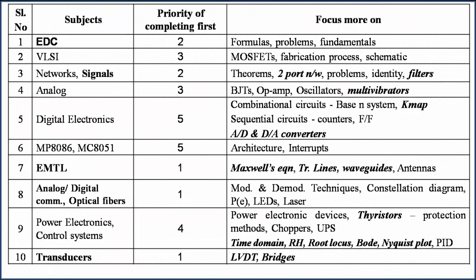Let us talk about the subjects you have to prepare for Electronic Science. The first one is EDC. How you have to prepare: remember the formulas, remember the fundamental concepts — that is very very important. And in VLSI you need to focus on MOSFETs and fabrication steps.